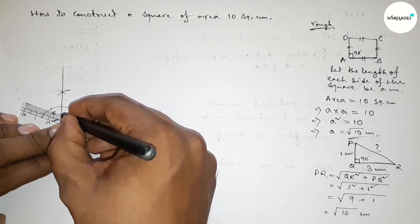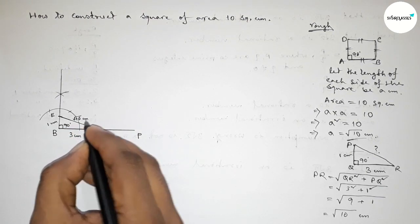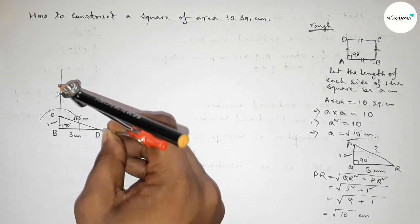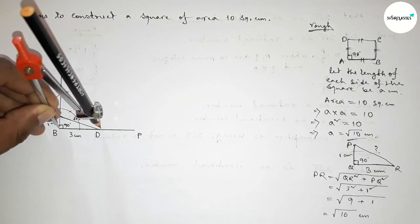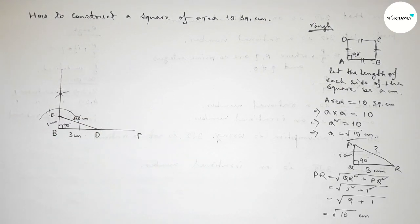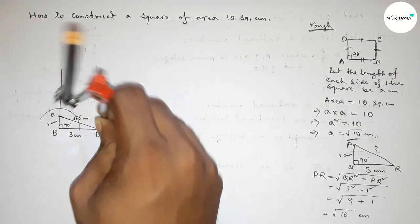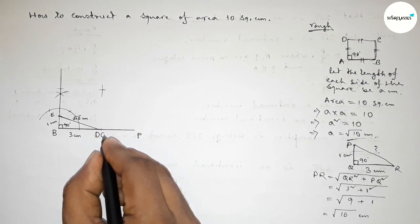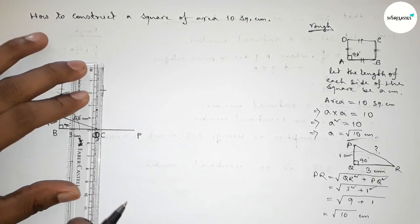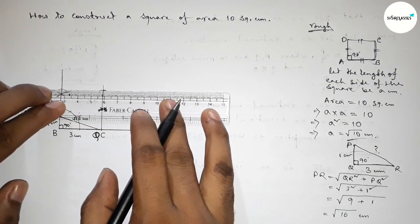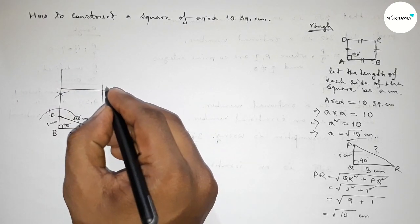Joining D and E, we get DE = √10 centimeters. Now taking the length DE = √10 centimeters using the compass, placing it on point B and cutting arcs on both sides, then placing the compass at the same length and drawing further arcs and cutting to get point Q.